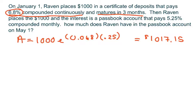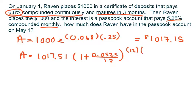So, then she places it into the passbook account. So, we have A equals $1,017.15, times 1 plus 0.0525, that's your rate, over 12, because it's compounded monthly. And then you write 12, and that's going to be monthly, so that's 1 over 12. And that gives her $1,021.60. So, that's what she's going to have on May 1st.